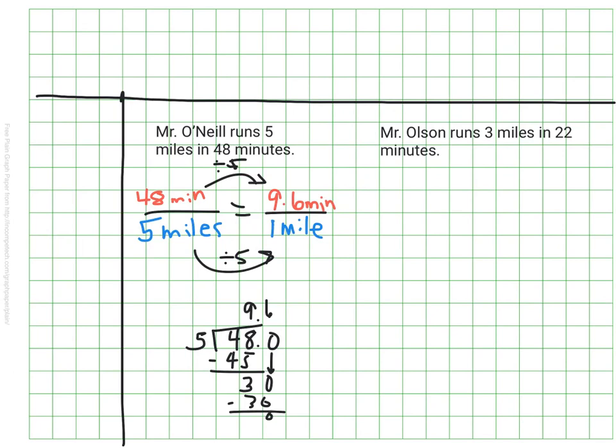So now to figure out how fast Mr. Olson runs his one mile, I'm going to do the same thing. Just as before, I've set it up. I know that he's running 22 minutes to make it three miles, so I need to figure out how long it takes him to go one mile.